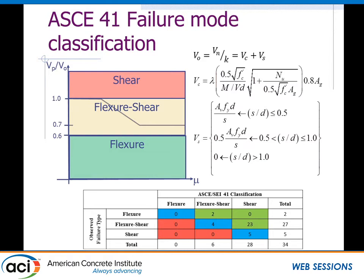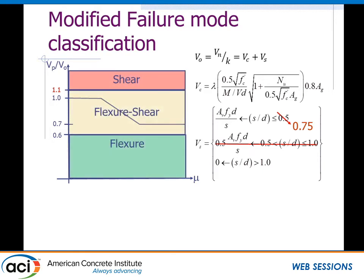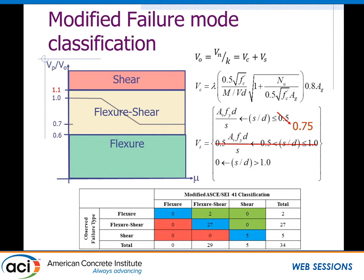This is perhaps over-conservative. We'd like to modify the classification scheme for a better match with observed failure modes. Taking the advice from Wasim, we'd change the decrease in steel contribution to just drop off after 0.75 and then interpolate down to 1.0. Additionally, we'd increase the flexure-shear range up to 1.1, because a lot of data falls just over 1.0 and we're really penalizing those cases. With those changes, we get a much better match with the observed failure modes, so we're classifying the columns correctly.